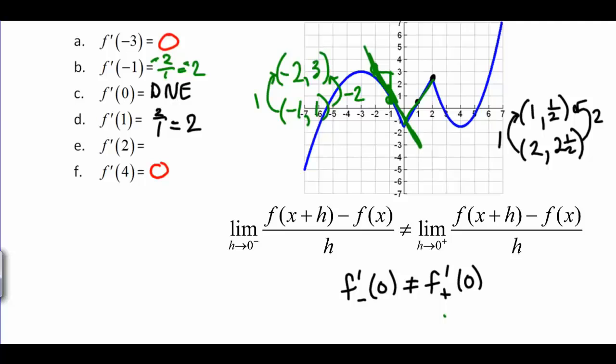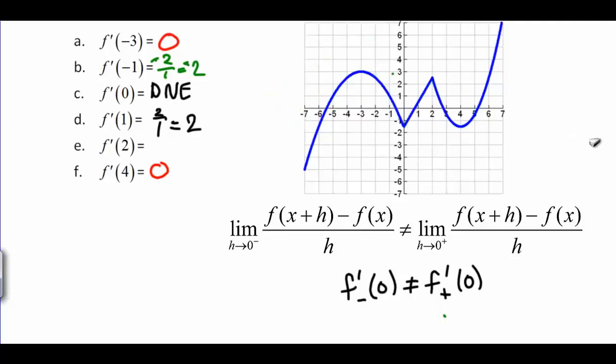Alright, we've got one more tangent line to do, and that is f prime of 2. But f prime of 2 is going to have the exact same problem that we had at 0. It's got this sharp corner here, and this sharp corner is going to tell us that if I take the tangent line on the left side and the tangent line on the right side, their slopes are not going to agree. So again, we're going to get DNE.